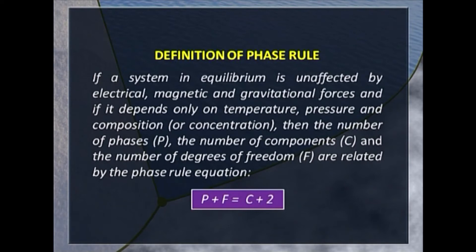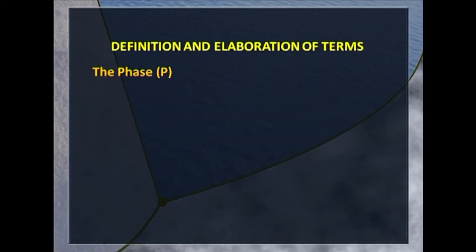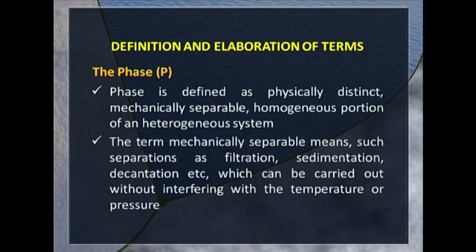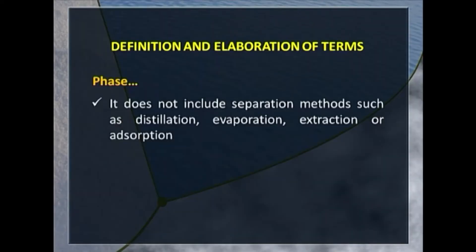If other forces are involved, then the equation may change. The definition of phase is: a physically distinct, mechanically separable, homogeneous portion of a heterogeneous system. Mechanically separable is important, which includes separation such as filtration, sedimentation, and decantation, in which we do not interfere with temperature and pressure. Therefore we exclude separation methods such as distillation, evaporation, extraction or adsorption.